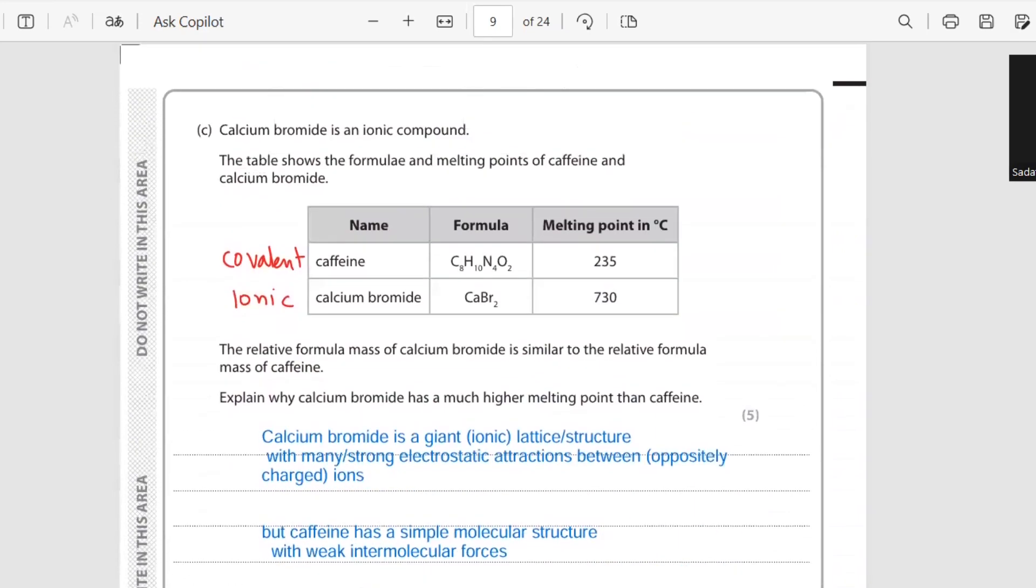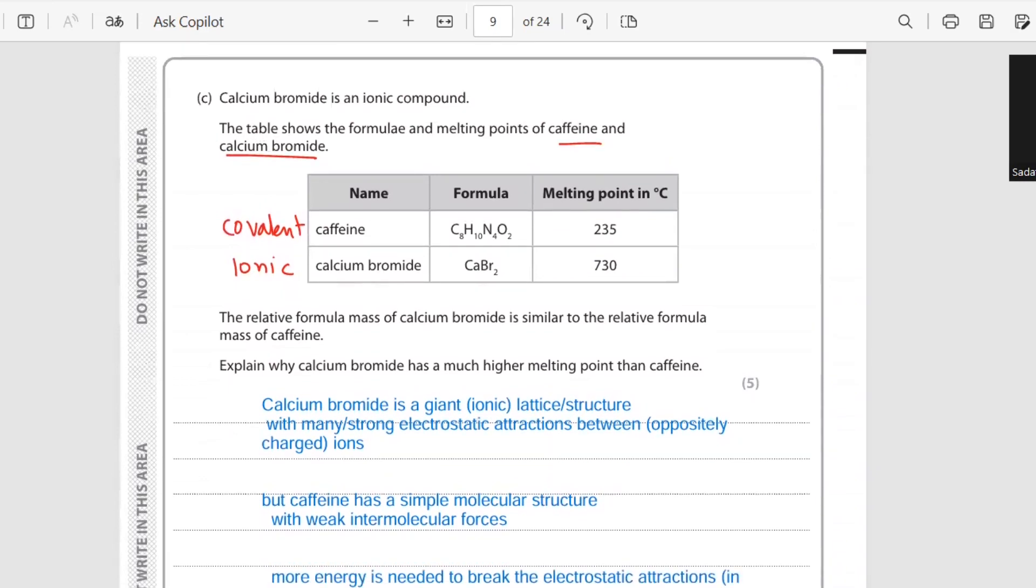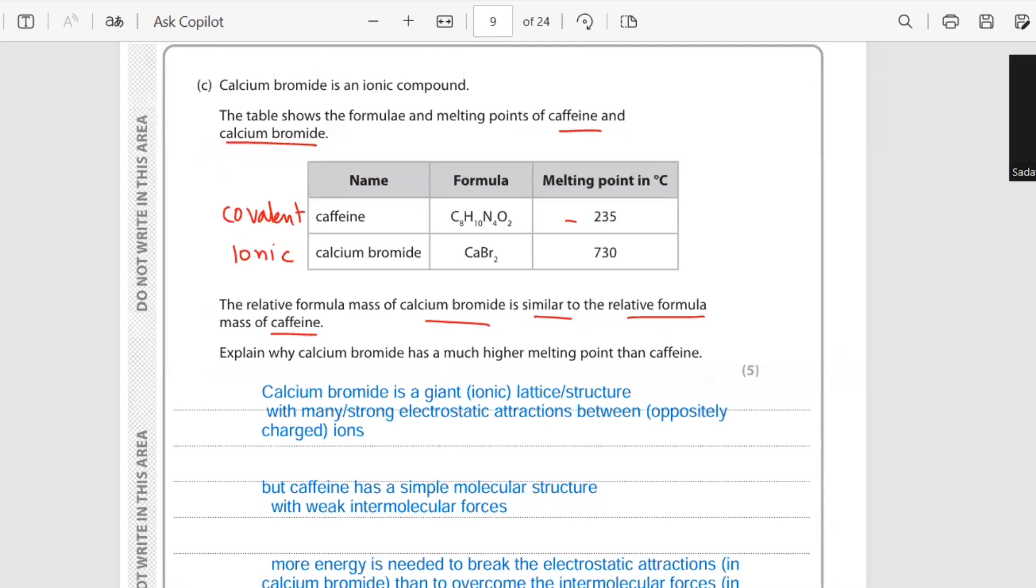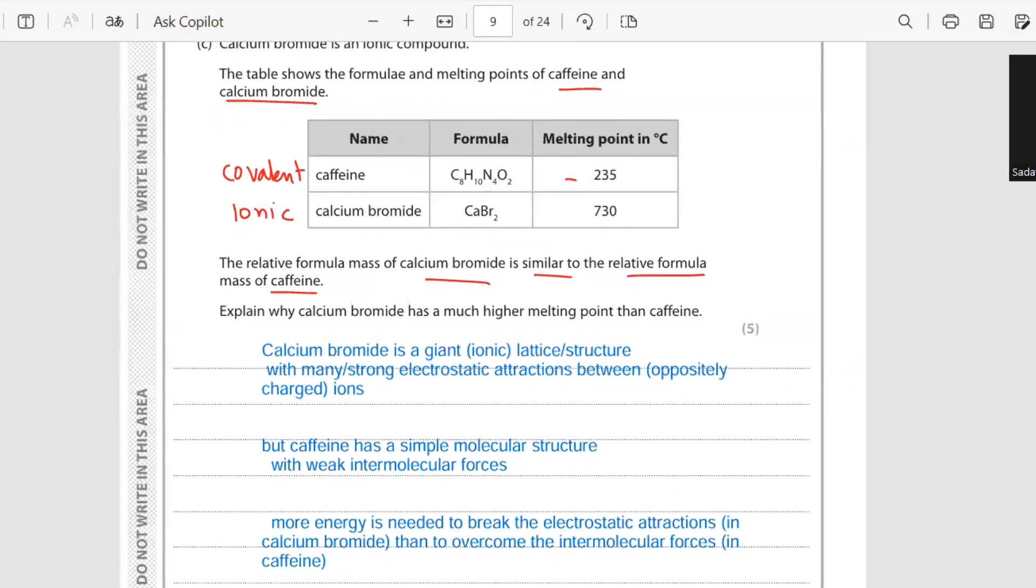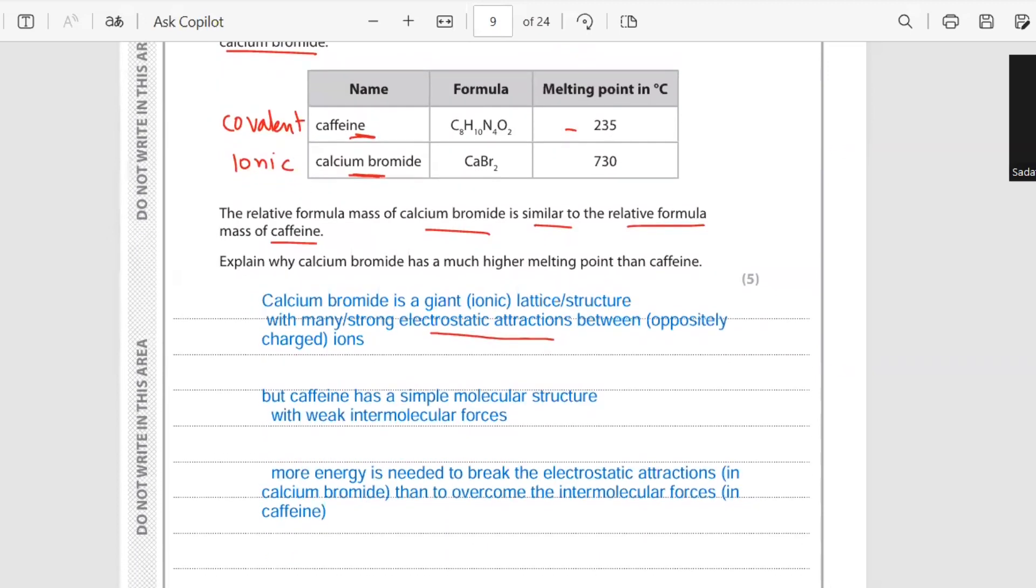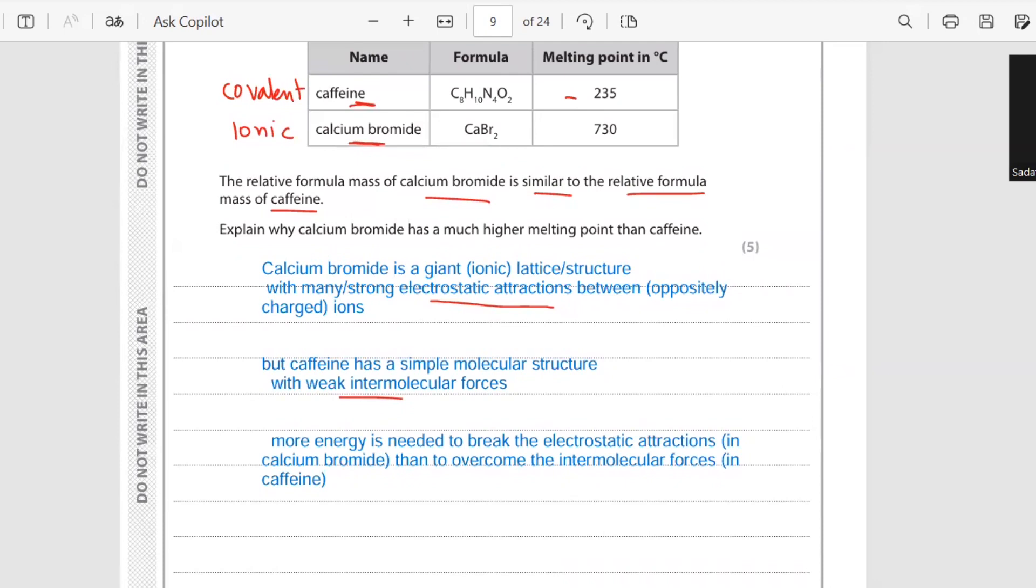Calcium bromide is an ionic compound. The table shows the formula and melting points of caffeine and calcium bromide. The relative formula mass of calcium bromide is similar to the relative formula mass of caffeine. Explain why calcium bromide has much higher melting point than caffeine. The reason is that caffeine is a covalent molecule and calcium bromide is an ionic compound. Calcium bromide is a giant ionic lattice or structure. It has many strong electrostatic forces of attraction between oppositely charged ions - it's very strong bond. Caffeine has a simple molecular structure with weak intermolecular forces. And then you have to make comparison: more energy is required to break the electrostatic forces of attraction in calcium bromide than to overcome the intermolecular forces in caffeine.